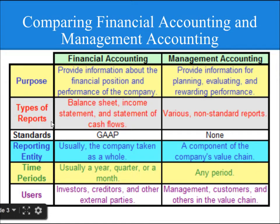In the case of Financial Accounting, the types of reports are Balance Sheet, Income Statement, and Statement of Cash Flows. Whereas in Management Accounting, reports can be various and non-standard. The standard used for Financial Accounting is GAAP; there is no such standard for Management Accounting. The reporting entity is usually the company as a whole for Financial Accounting, and a component of the company's value chain for Management Accounting.